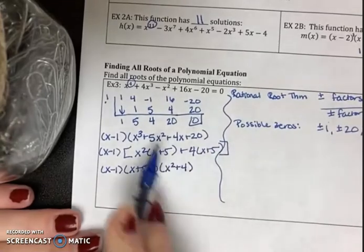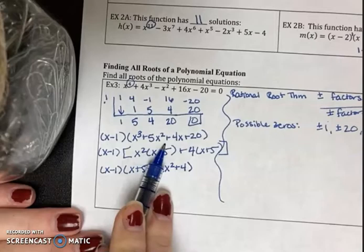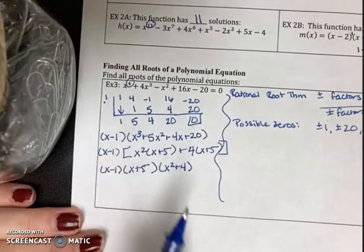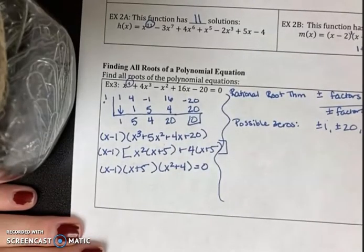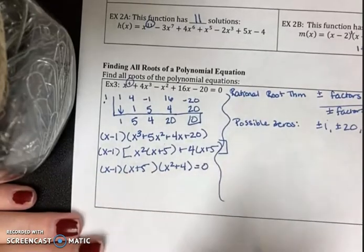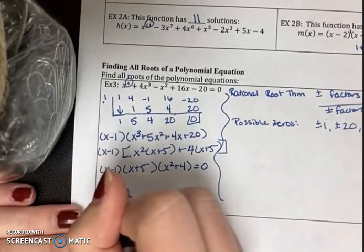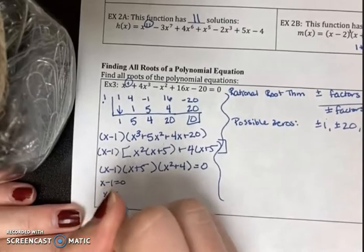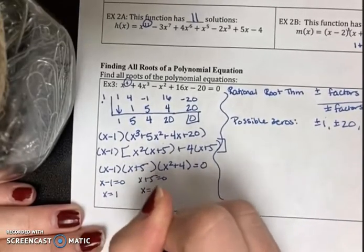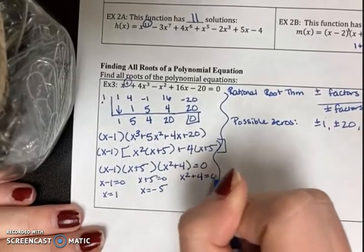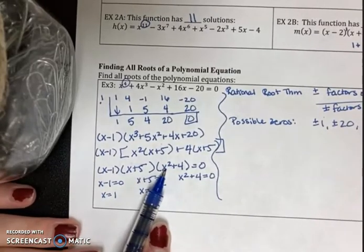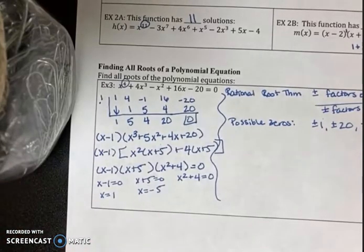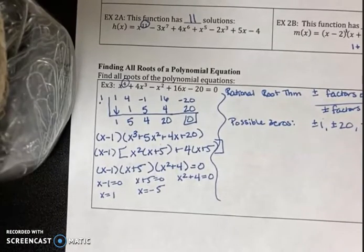If factoring by grouping hadn't worked, I would have had to do synthetic division again. Now set each factor equal to zero. Note that x²+4 cannot be written as a difference of two squares because of the plus sign — it needs a minus to factor that way. So x²+4 does not factor over the reals, but that doesn't mean it has no solutions.